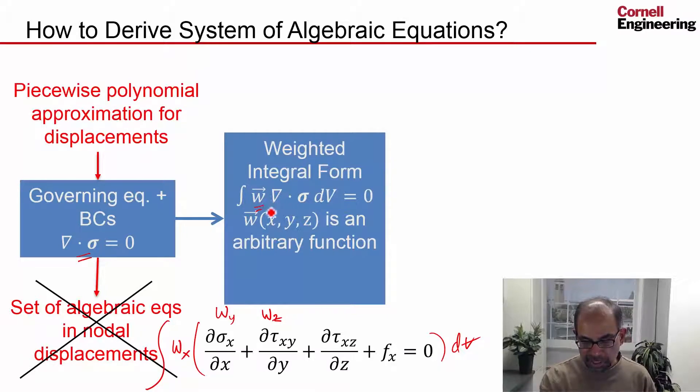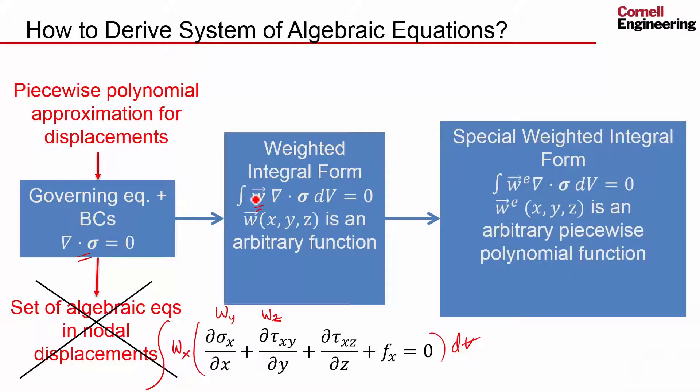But we know we can't satisfy this for any arbitrary W. So we have to say that W is also a piecewise, element by element polynomial. When you have that, you can do the same business as before, where you transfer the derivative to the weighting function.